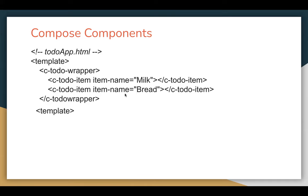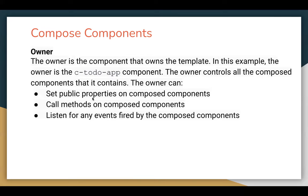Here you can see we are setting item-name with milk and bread values. These are public properties — item-name is defined in the todo-item component. The owner can also call methods on composed components — I will demo that in an upcoming video. The owner can also listen for any events fired by the composed component. The composed component will be treated as a child component, so if the child component is firing any event, that event can be handled through the owner or parent component. I will demonstrate that in a separate video as well. So these are the three things that can be done by the owner component.